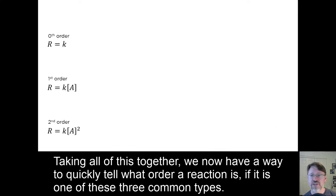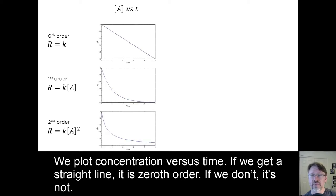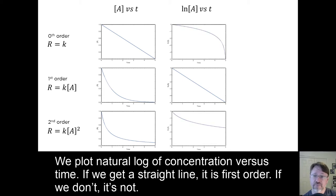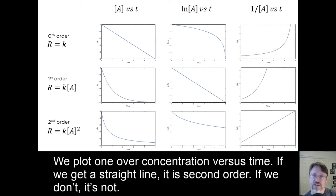Taking all of this together, we now have a way to quickly tell what order a reaction is, if it is one of these three common types. We plot concentration versus time — if we get a straight line, it is zeroth order; if we don't, it's not. We plot natural log of concentration versus time — if we get a straight line, it is first order; if we don't, it's not. We plot one over concentration versus time — if we get a straight line, it is second order; if we don't, it's not.